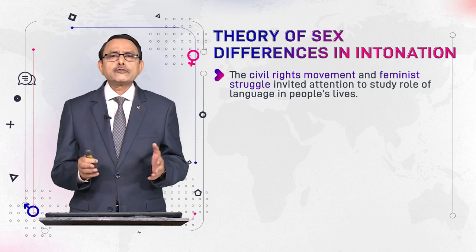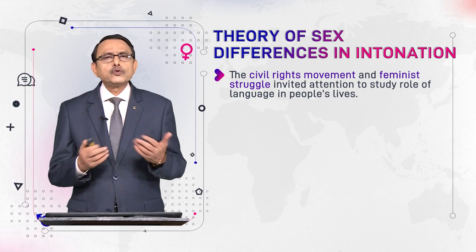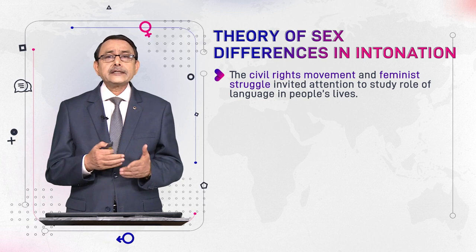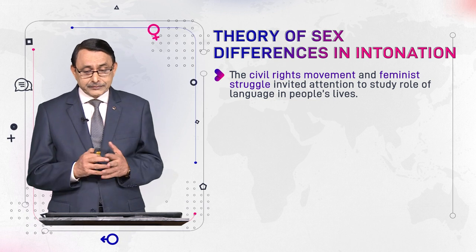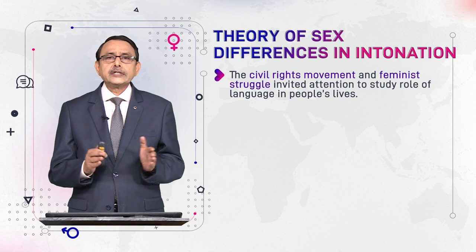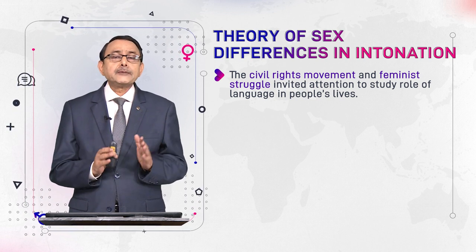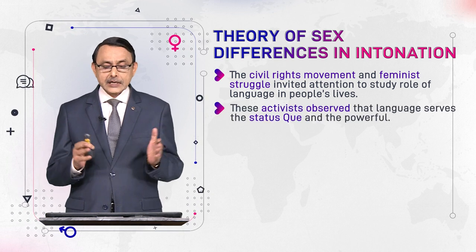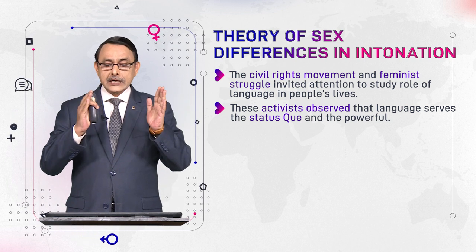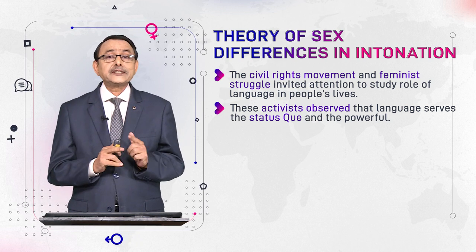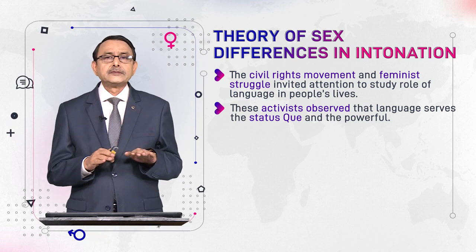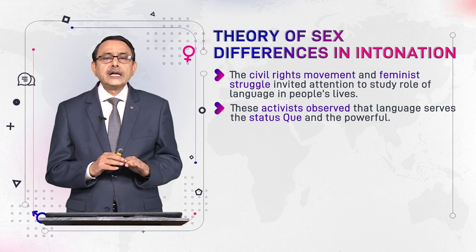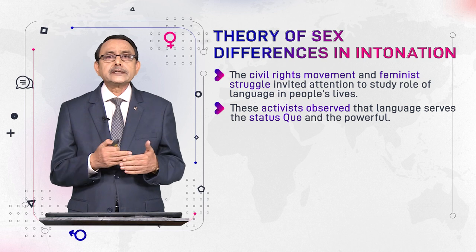Because language is taken for granted — it is something that we use unthinkingly, unconsciously — we never think that it is transforming our life, that it has a central role in our life. So, for the first time in the history of the US, it was taken seriously that we should study how language affects our lives. These activists observed that language serves the status quo and the powerful. Language plays a central part in maintaining the social system as it exists — it maintains it, reinforces it, and strengthens it — and this strengthening of current social conditions is in benefit of the powerful, and by powerful we also mean men.